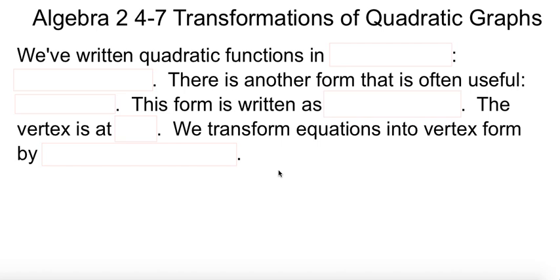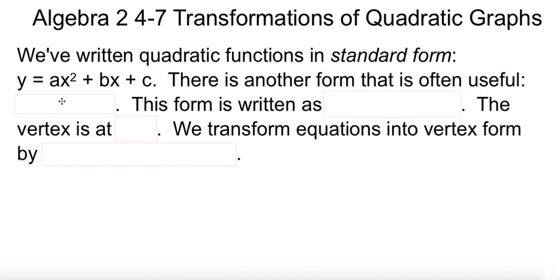This is Algebra 2, Chapter 4, Section 7, in which we will be doing transformations of quadratic graphs. So far we've worked with our functions in standard form, ax squared plus bx plus c. There's another version of it, another variation here, called vertex form.